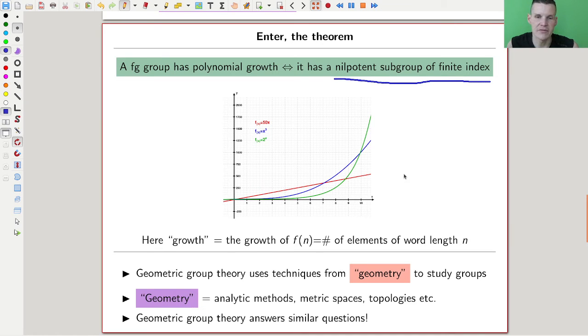And nilpotent subgroup of finite index, you can read this as it's essentially finite. And growth means you write down, you fix some presentation, some generators and relations for your group, whatever it is, and then you can write down words, and you count the number of words of a given length that represent different elements. It gives you a function and you study the function, the growth of this function.